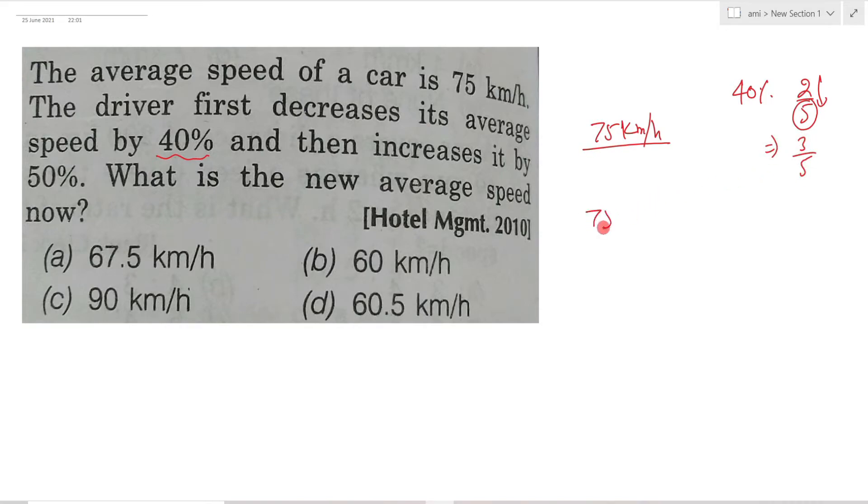So you change 75 by applying 3/5. Next, you have a 50% increase. 50% in ratio terms is 1/2, and when you increase by 1/2, the factor becomes 3/2.